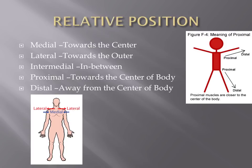Proximal and distal. Proximal means toward the center of the body — more specifically it's about the length of an appendage. The elbow is proximal to the hand, meaning it's closer to the center of the body. The hand is distal to the elbow because it's farther away. The foot is distal to the hip; the hip is proximal to the foot. Distal basically means away from center.